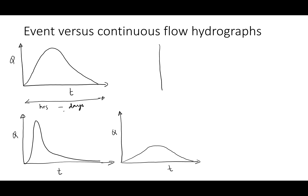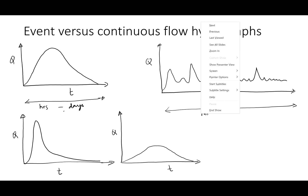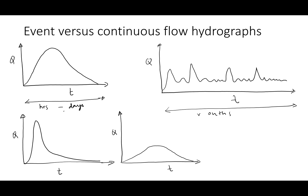Now let's look at how a continuous hydrograph looks. In a continuous hydrograph, we have these peaks depending on when there is rainfall, and when there is no rainfall, what you see is sort of base flow. The time scale on a continuous hydrograph could be from months to years — a few months, a few years, maybe 10 to 50 years, or even 100 years.